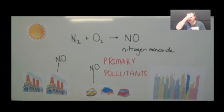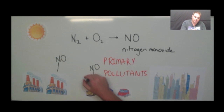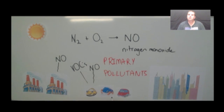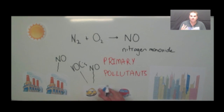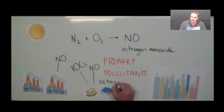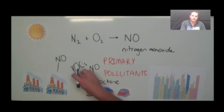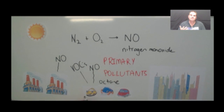Some of the other things emitted are what we call VOCs — volatile organic compounds. These are basically unburnt hydrocarbons. So when you burn your engine fuel, you're burning octane, but you don't burn all of it, so sometimes you release some of that into the atmosphere. That's what we call volatile organic compounds — they're the ones that readily react. So that's another example of a primary pollutant.